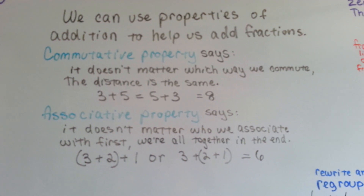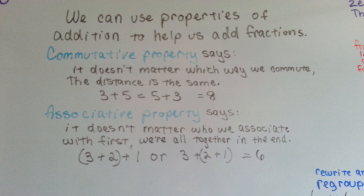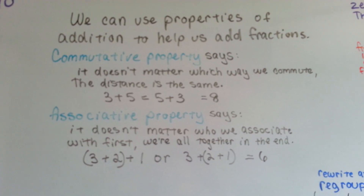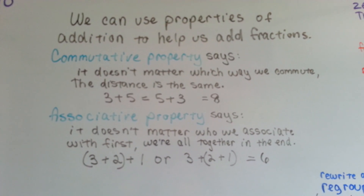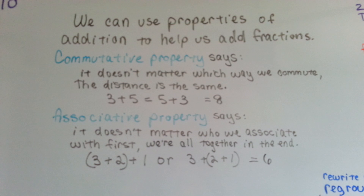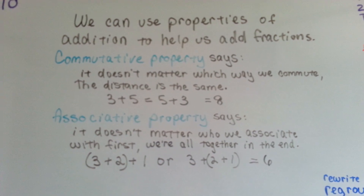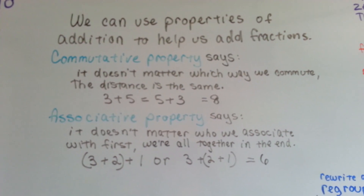The commutative property says it doesn't matter which way we commute — the distance is the same. 3 plus 5 is equal to 5 plus 3. It doesn't matter which ones we add first; the sum is going to be the same.